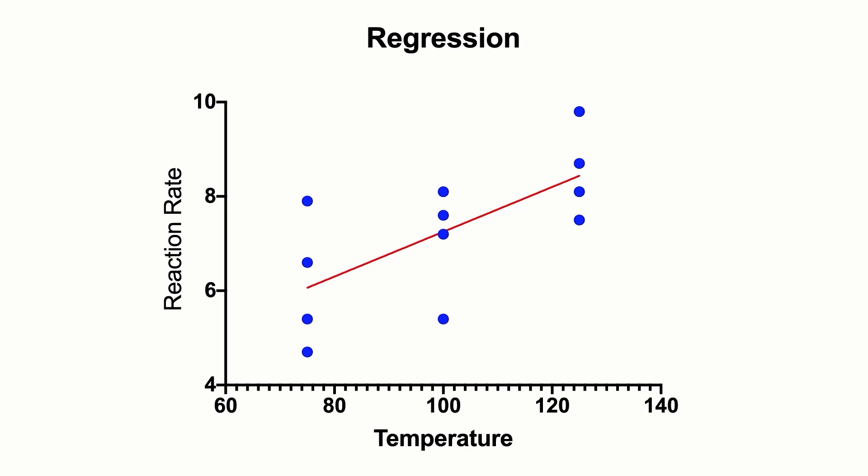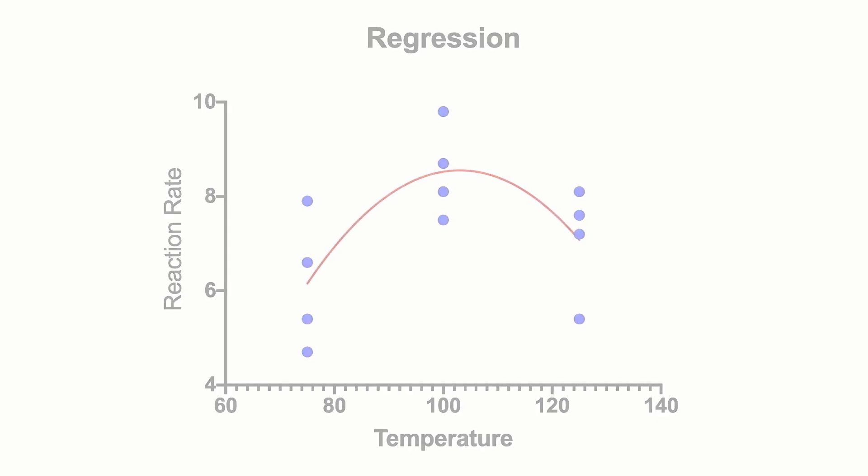Regression has more power than ANOVA to find differences when there is a linear trend. And when the trend is nonlinear, regression is still a good choice, but you would need to fit a quadratic model.